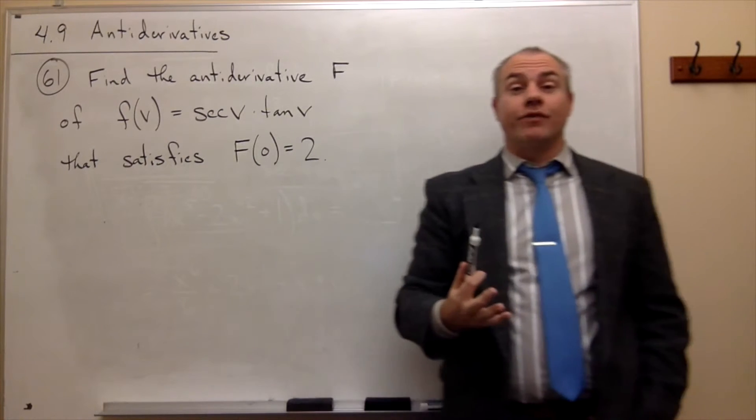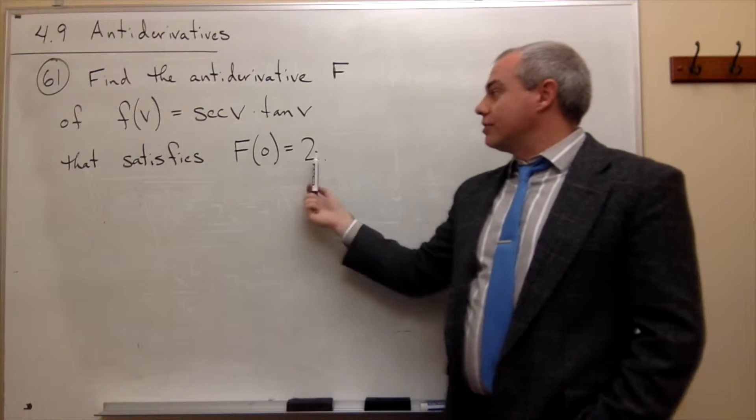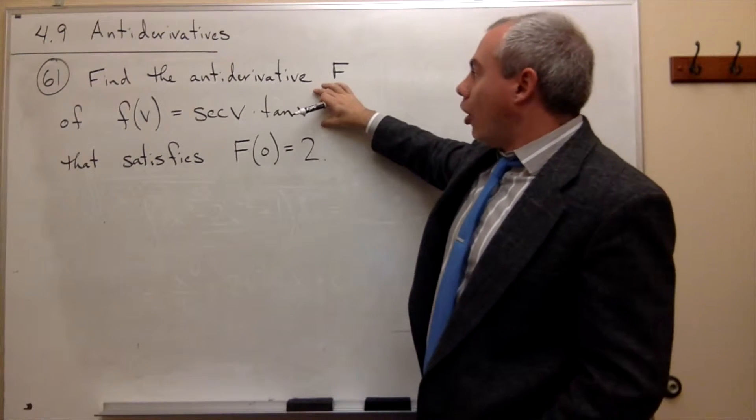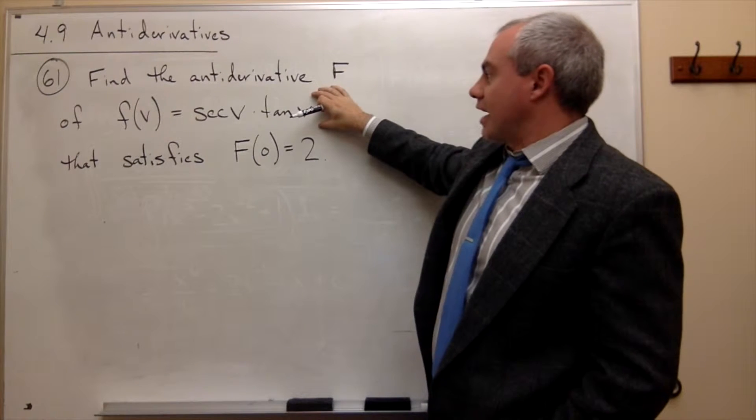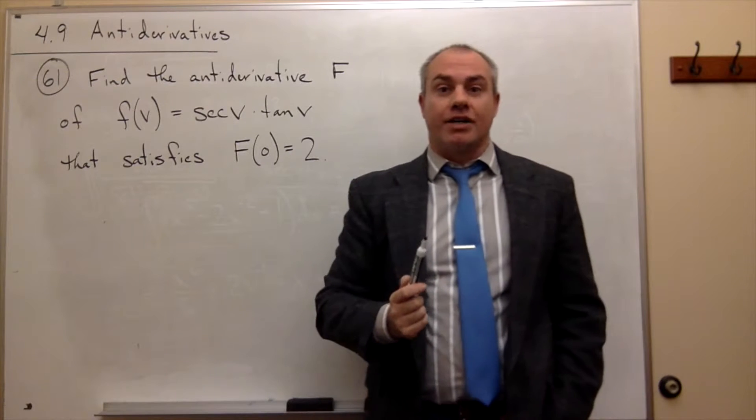So we have an initial value problem where we want the antiderivative at 0 to be equal to 2. What we really want to do is find all antiderivatives of this function and then figure out which one satisfies the initial condition.